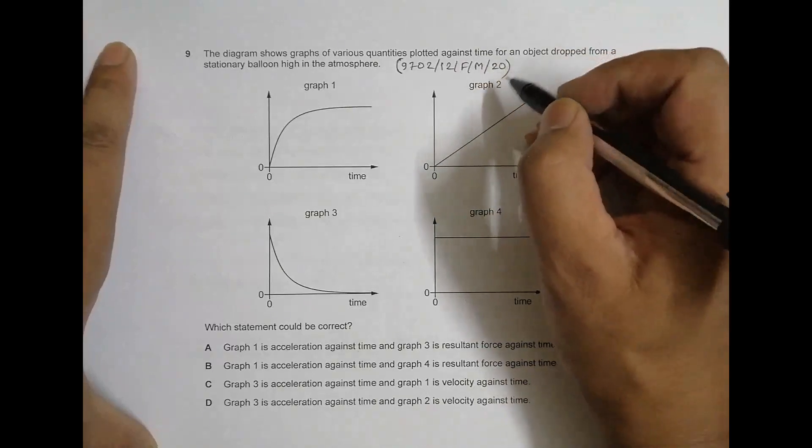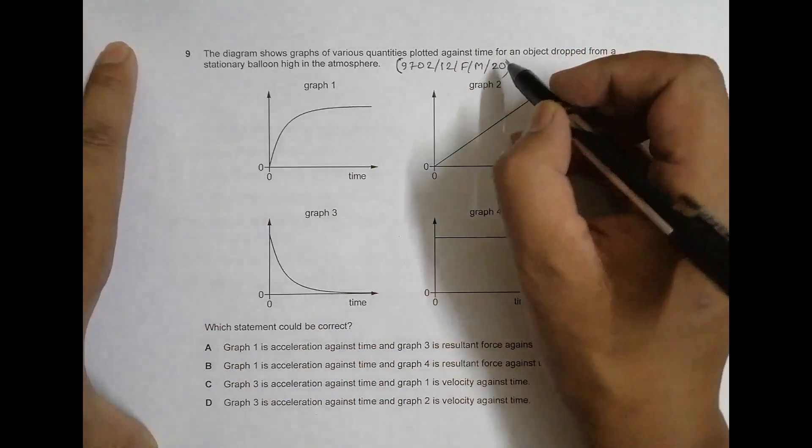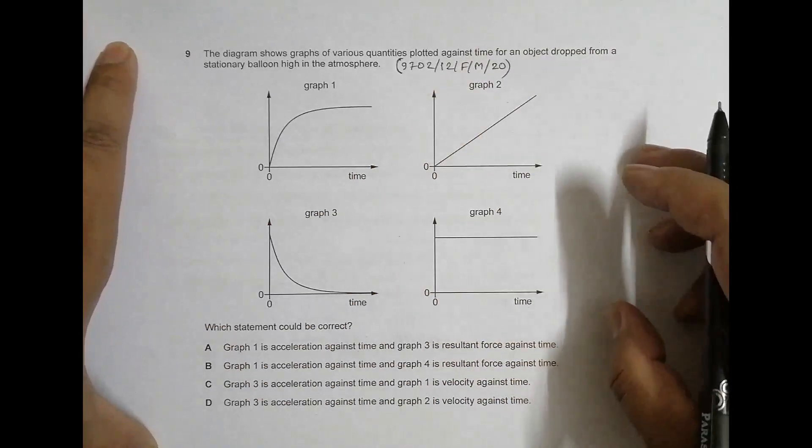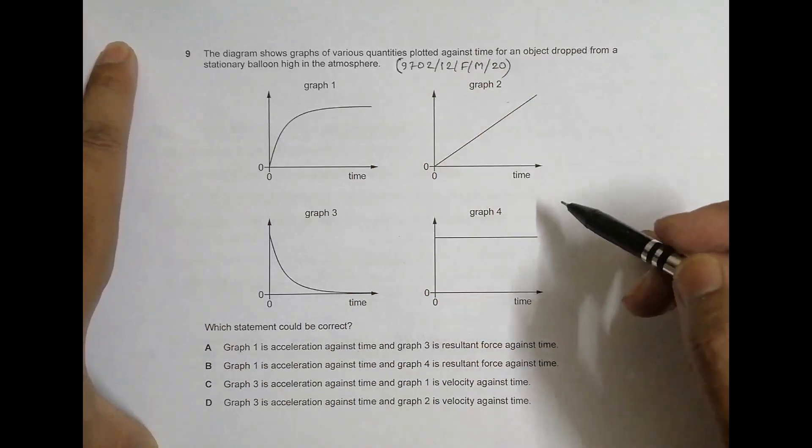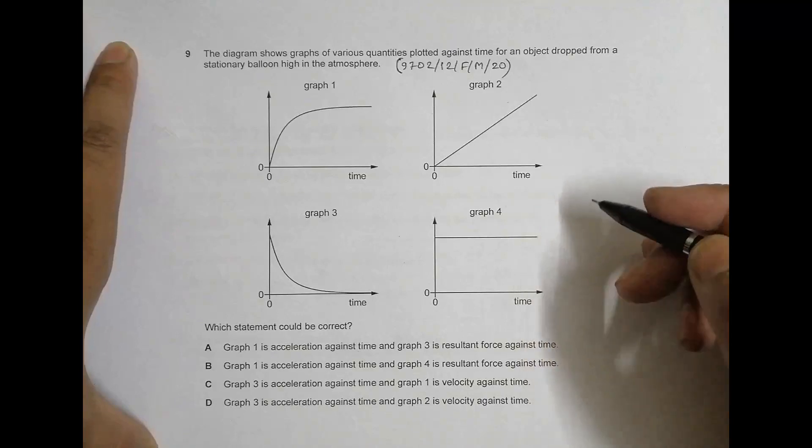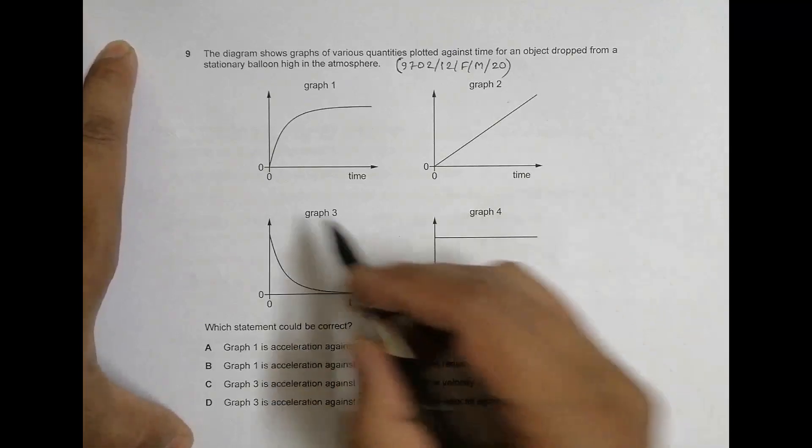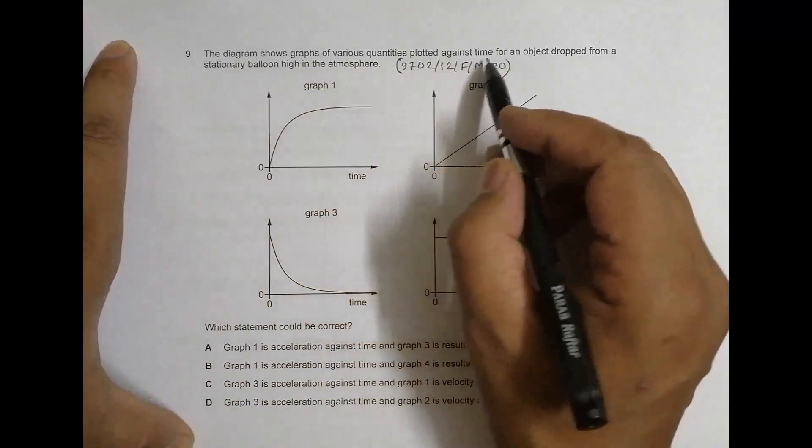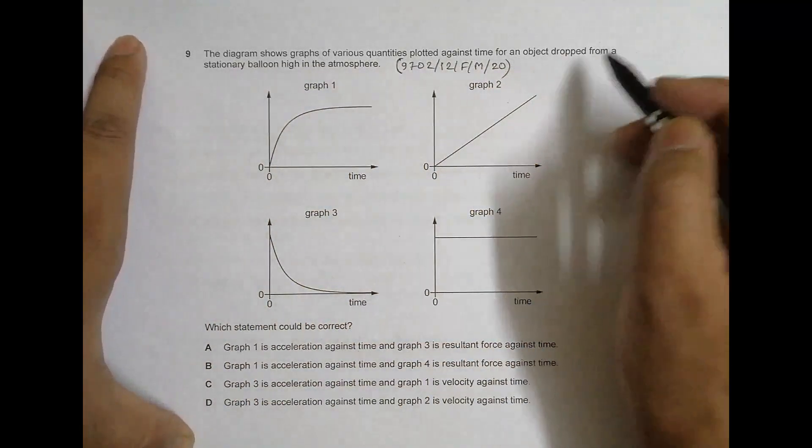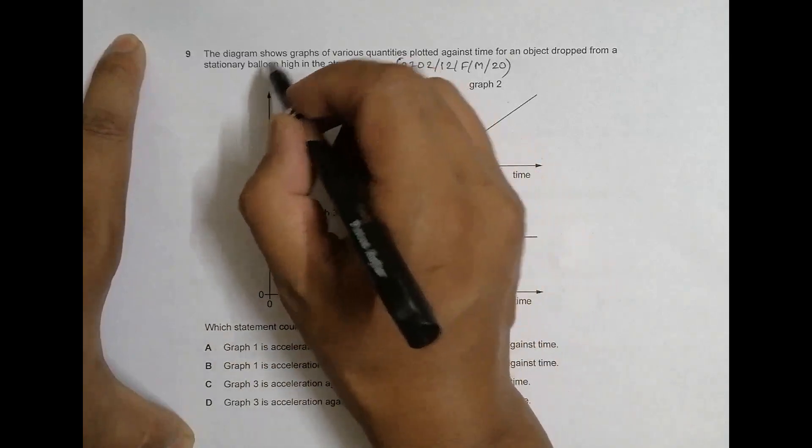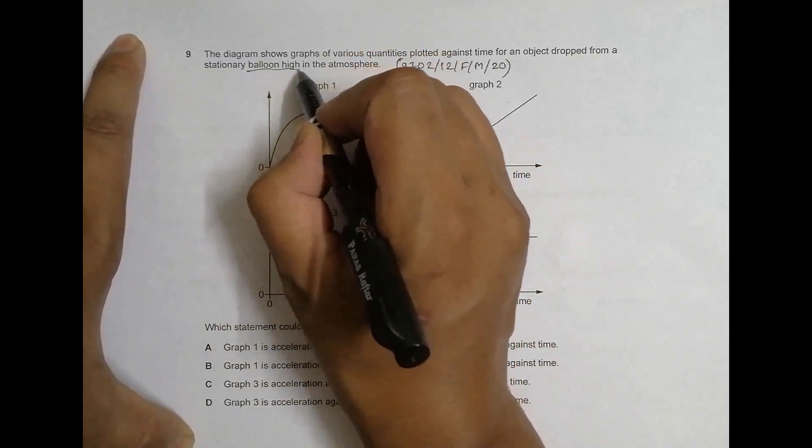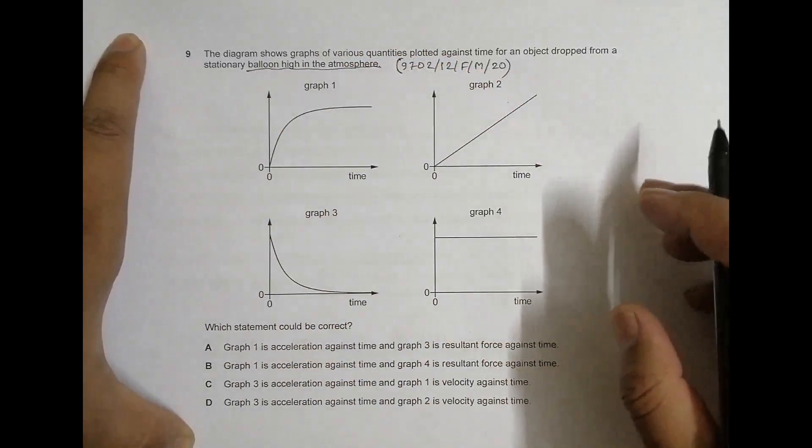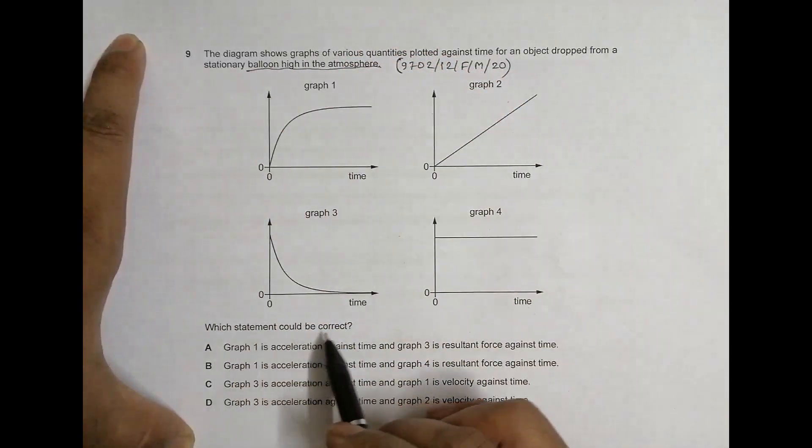Hello folks, the question today is question number 9, 2020 February March paper 12. This question belongs to kinematics or the chapter of forces. The diagram shows graphs of various quantities plotted against time for an object dropped from a stationary balloon high in the atmosphere. So high in the atmosphere means that as it falls it suffers from air resistance.